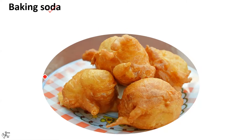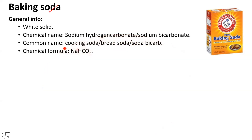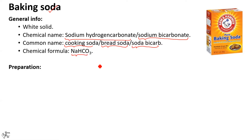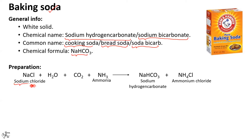The chemical name of baking soda is sodium hydrogen carbonate, also known as sodium bicarbonate. It also goes by the name of soda bicarb, cooking soda, as well as bread soda. The chemical formula is NaHCO₃. Coming on to its preparation, it is prepared in the laboratory from sodium chloride by passing carbon dioxide gas through a cold solution of sodium chloride saturated with ammonia. The equation for the reaction illustrates that the products are sodium hydrogen carbonate and ammonium chloride.